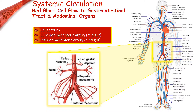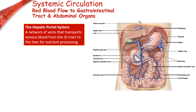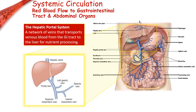Veins of the gastrointestinal tract all merge into some part of the hepatic portal system. The hepatic portal system is a network of veins that drains the GI tract and shunts the blood to the liver for absorption and processing of transported materials. The liver is unusual in that it has a double blood supply. Following nutrient absorption, the blood exits the liver through the hepatic veins that merge with the inferior vena cava.